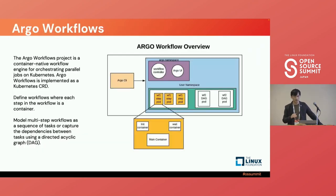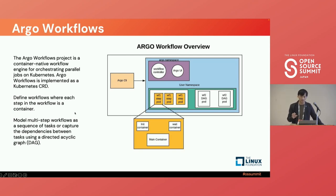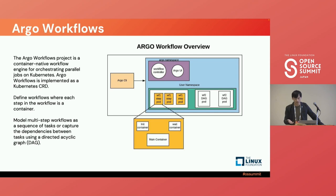Behind the scenes, Kubeflow pipeline uses Argo workflow as the execution runtime. Argo workflow is a very popular CI/CD open source container-native workflow engine. Argo implements its own Kubernetes CRDs called workflow and uses a directed acyclic graph — the DAG — to construct a multi-step workflow and its dependencies. Each step inside the workflow is an individual container definition. There is also a workflow controller which monitors the overall workflow CR and the corresponding pods for each step, and based on the DAG, updates the status for each step.